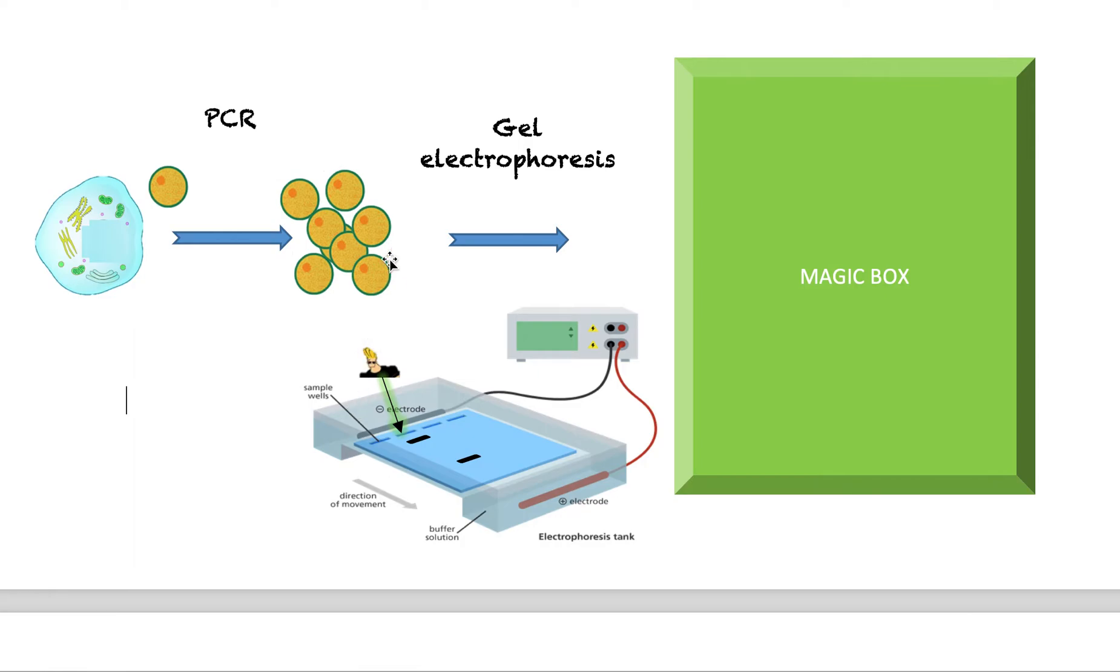So every individual's DNA is negatively charged. And I'm sure you've heard before that negative and positive things attract. Opposite charges attract. And by turning on this machine, you turn on this positive charge here. And so your negatively charged DNA in here will slowly move towards the positive side here.